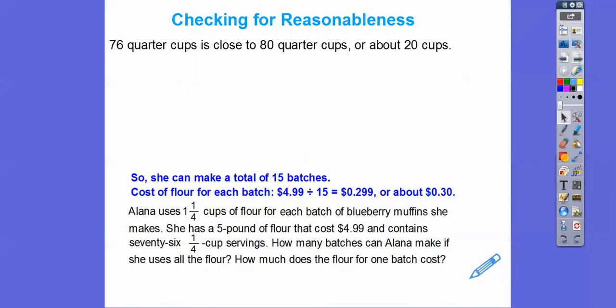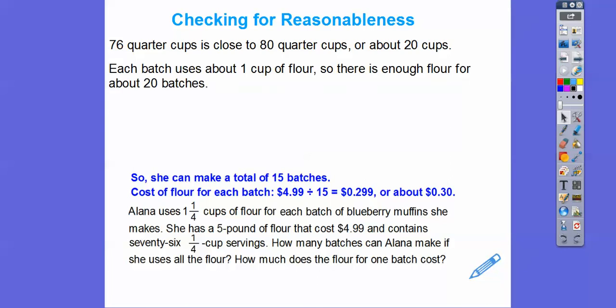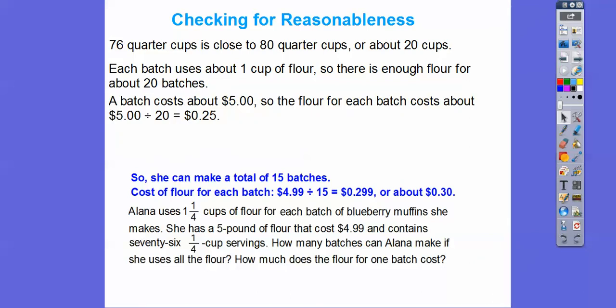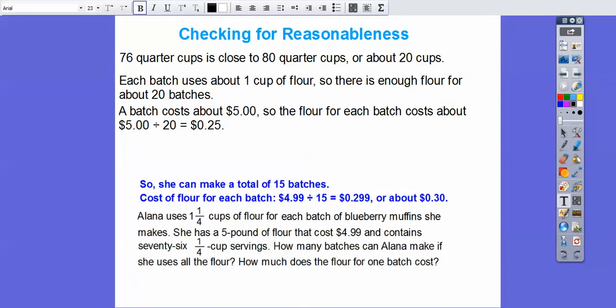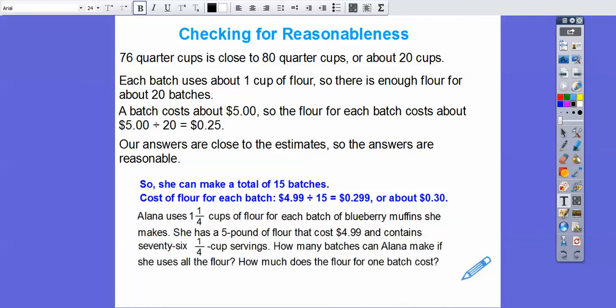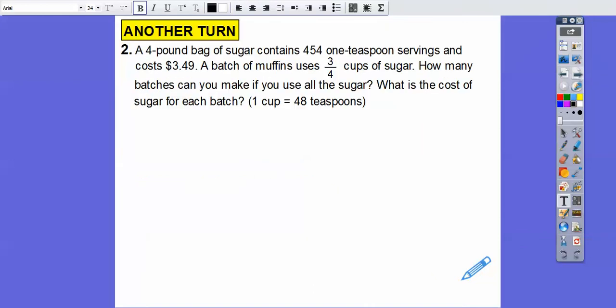Let's check for reasonableness. 76 quarter-cups is close to 80 quarter-cups. Dividing by 4 gives about 20 cups. Each batch uses about 1 cup — it was 1 and 1/4, but we'll round to 1 — so there's enough flour for about 20 batches. The bag costs about five dollars — it was $4.99. Five dollars divided by 20 batches is about $0.25, and our true answer of about 29 cents is close to that estimate. So our answer is reasonable.